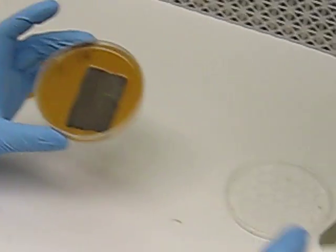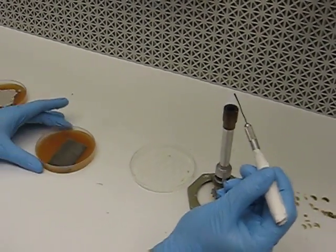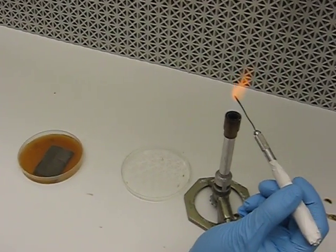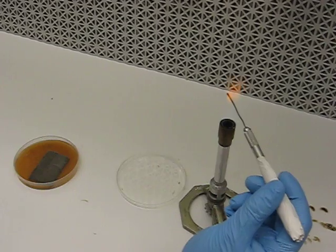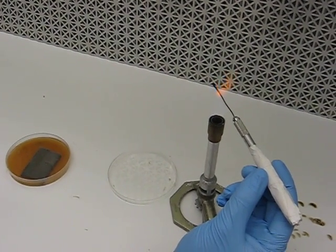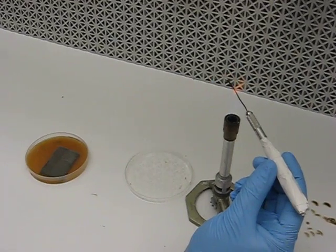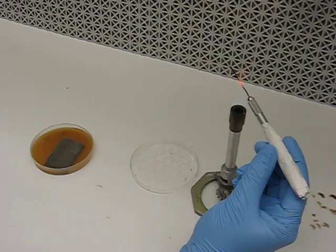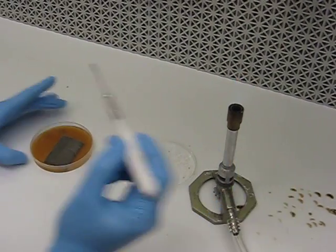When subculturing Cercospora, you always want to heat-sterilize your tool whenever you touch your media. We're basically going to be excising a small portion of the biomass of this Cercospora culture and gently patting it onto our fresh media.